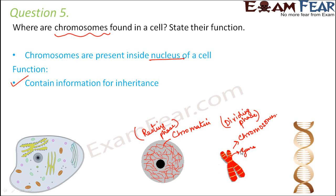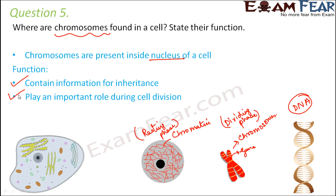On the chromosomes are located genes, which determine a particular trait of an organism. On these genes is present the DNA, which is our genetic material. Chromosomes play a very important role as carriers of inheritance. During cell division, part of the chromosome is passed on to the new cells being produced, and that is how information is carried forward from one generation to another. The exact process will be understood when we learn about cell division.